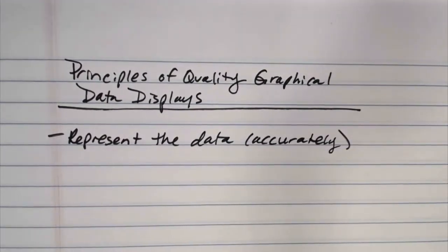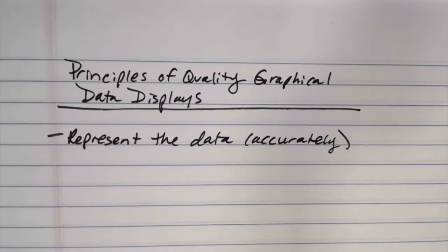We want to represent the data in a way that is accurate. Whatever story it is that the data are trying to tell, our graphical display should help to enhance that. It shouldn't skew the data, it shouldn't bias the data. It should accurately represent the trends that are present in the data set itself.